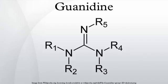Guanidine is the functional group on the side chain of arginine. Structurally, guanidine can be thought of as a nitrogenous analog of the carbonic acid functional group — that is, the C=O group in carbonic acid is replaced by a C=NH group, and each OH is replaced by a NH2 group.